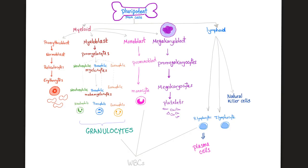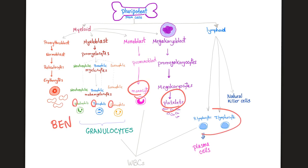Here are your pluripotent stem cells, which give rise to myeloid and lymphoid lineages. The myeloid lineage gives you RBCs, granulocytes — which include neutrophils, basophils, and eosinophils, or as I like to say, BEN — and then monocytes, platelets, and lymphocytes with natural killer cells. Neutrophils are granulocytes, the N in BEN, so they have granules. These granules are neutral — neither basophilic nor eosinophilic.